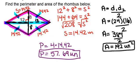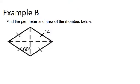Let's go to example B. Find the perimeter and area of the rhombus below. This time, we know different information than last time. We know all four sides are 14, so we can figure out the perimeter pretty easily by just doing 4 times 14 to get our answer of 56 units.